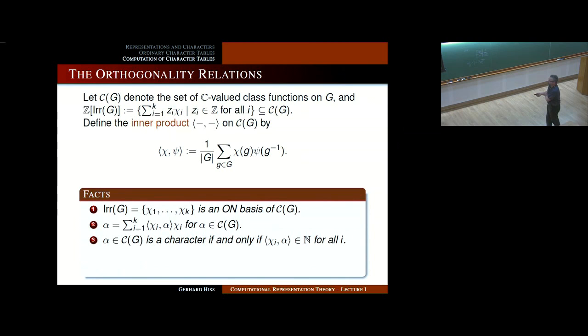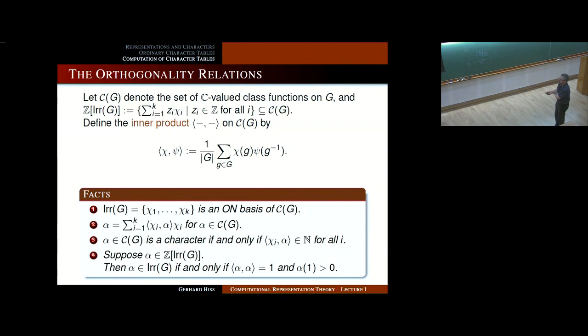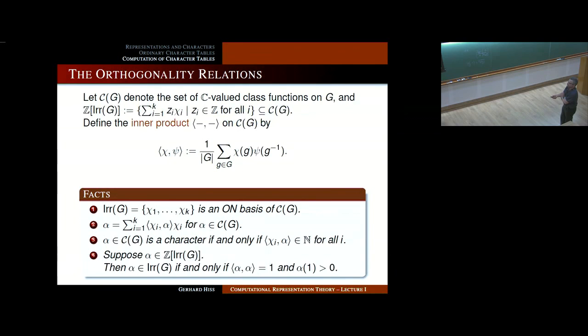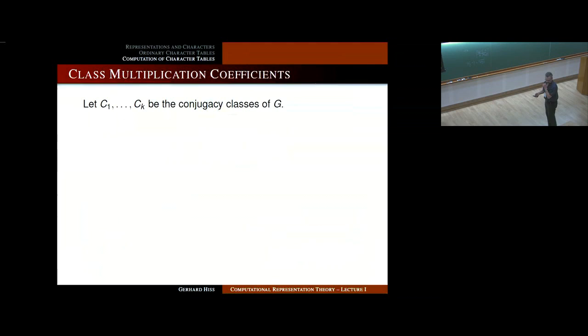This is crucial: a class function is a character if and only if all these inner products evaluate to natural numbers. Also, if you have a generalized character with norm squared equal to one and degree greater than zero, then it must be an irreducible character. So if you have generalized characters, you might try to find those with small norm — preferably norm one — and then adjust the sign of the degree if necessary to get an irreducible character. This is one of the ideas behind the lattice reduction algorithm by Bill Unger.